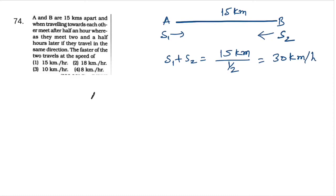Now if we have A and B in the same direction with distance 15 km, suppose this speed is S1 and this speed is S2. When moving in the same direction, net speed is S1 minus S2. Distance is 15 km and time is 2.5 hours.